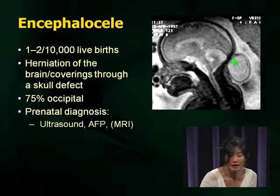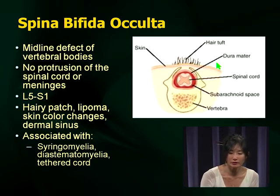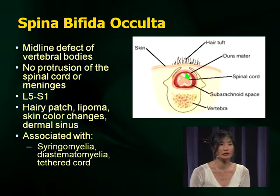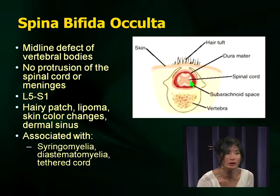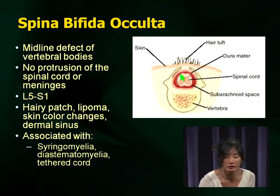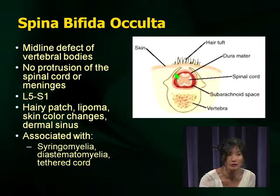Let's talk about different types of spina bifida. Spina bifida occulta is seen relatively frequently. On examinations, they won't show you a picture and ask what it is — they'll show you a hairy patch, a lipoma, skin color changes, or a dermal sinus and ask what it's associated with. Spina bifida occulta — from the name — is a hidden defect in the fusion of the vertebral body. There is no protrusion of the spinal cord or meninges; it's hidden, seen as a tuft of hair, lipoma, or skin discoloration.